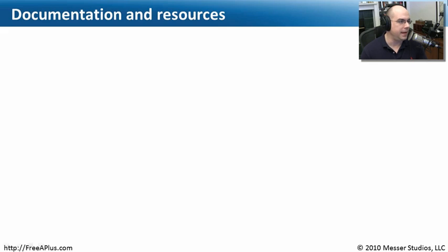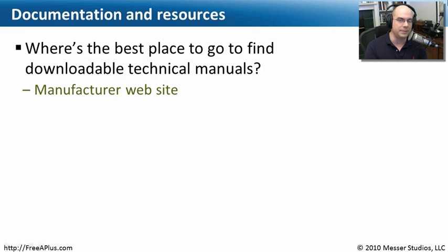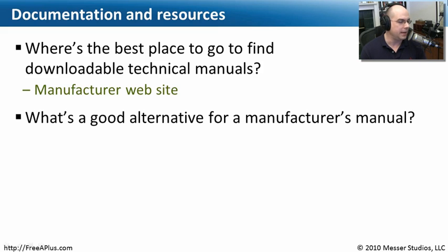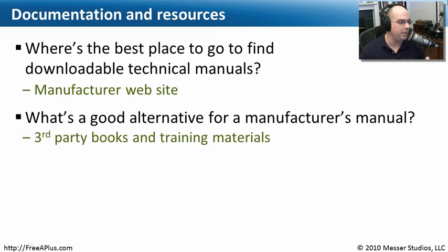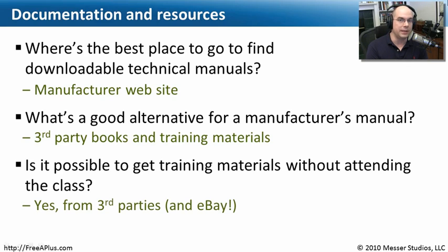Let's review what we covered. Where's the best place to find downloadable technical manuals? The manufacturer's website will have detailed information. What's a good alternative to a manufacturer's manual? A third-party book or training material can provide the information you need. Is it possible to get training materials without attending a class? Sometimes yes, sometimes no — but third-party sources like eBay are a great place to find those manuals.